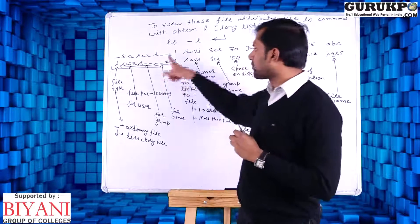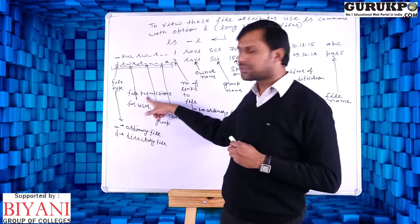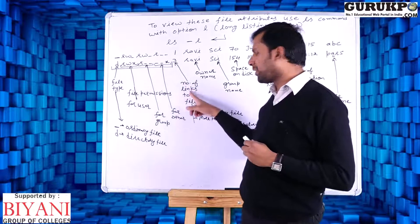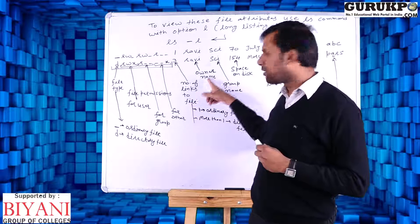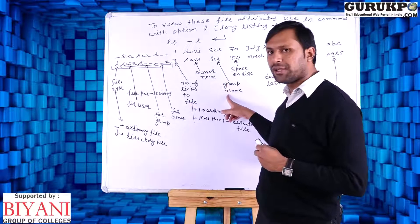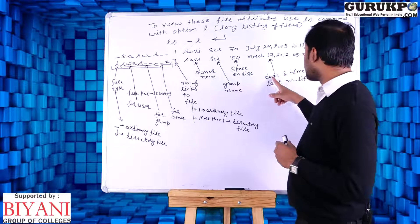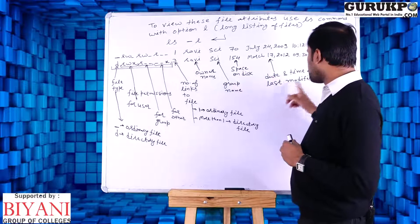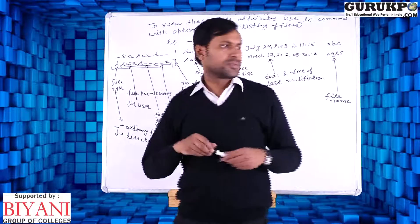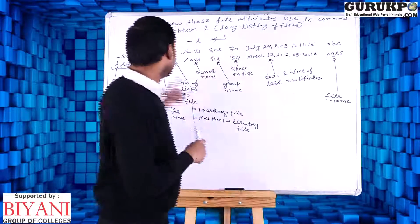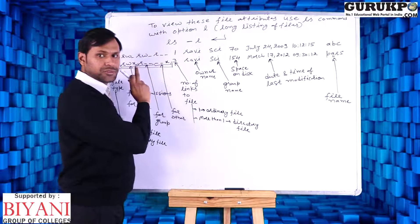The ls -l output shows: number one — file type and file permissions; second — number of links to file; third — owner of file; fourth — group name of file; fifth — space occupied on disk; sixth — last modification date and time; and last — file name.